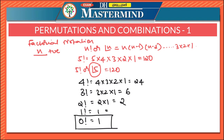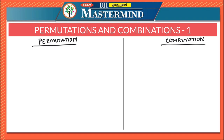Factorial notation is commonly used in permutations and combinations. Now let us see what permutation and combination mean, side by side. Permutation means different arrangements of a given number of things by taking some or all at a time, whereas combination means selection — each of the different groups or selections which can be formed by taking some or all of a number of objects.